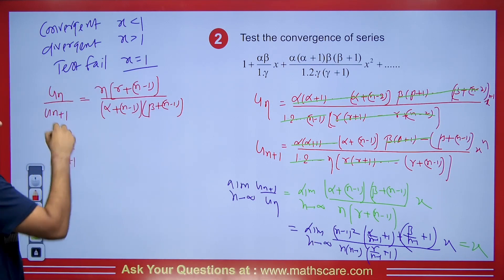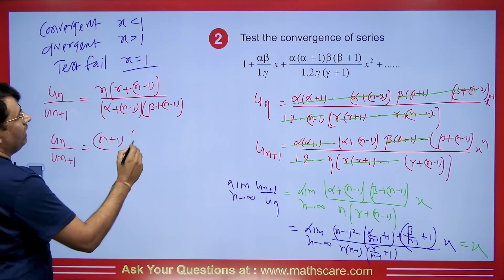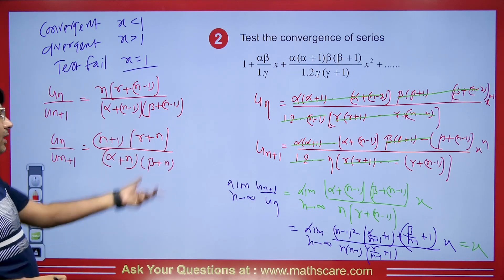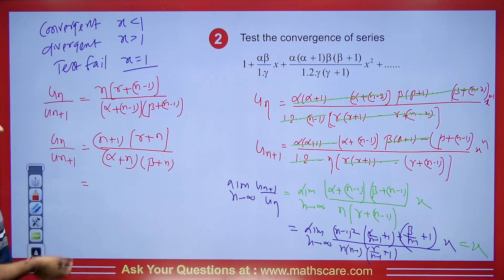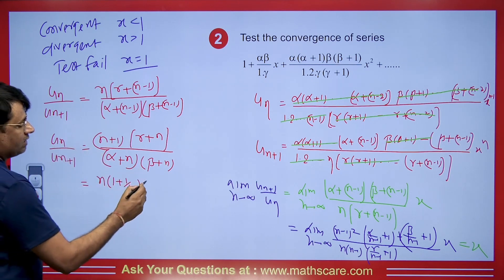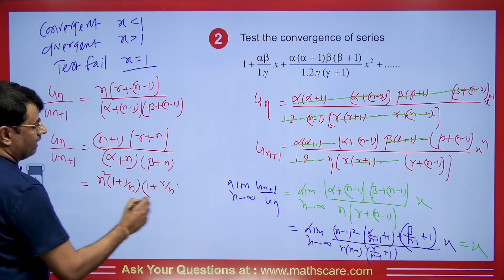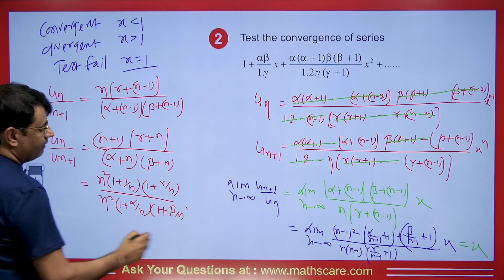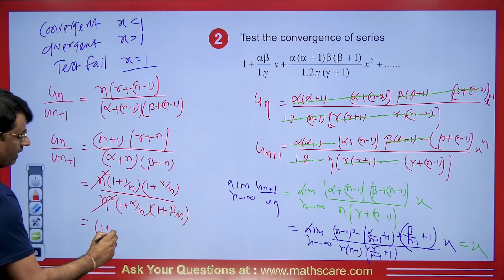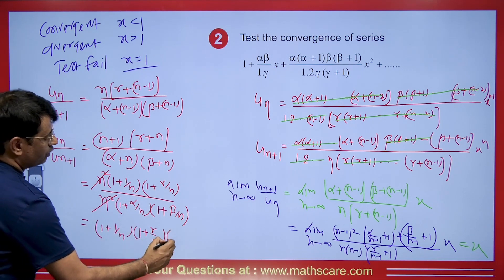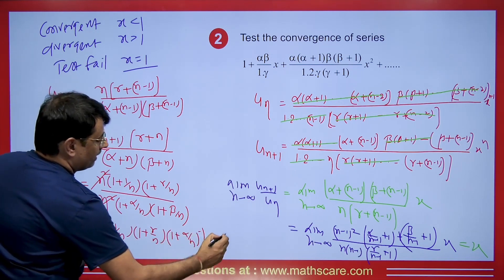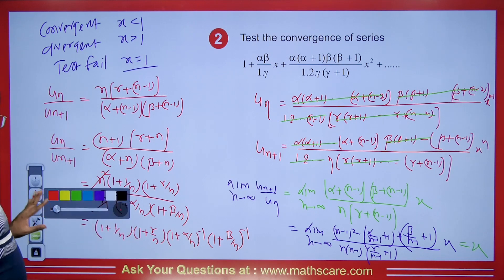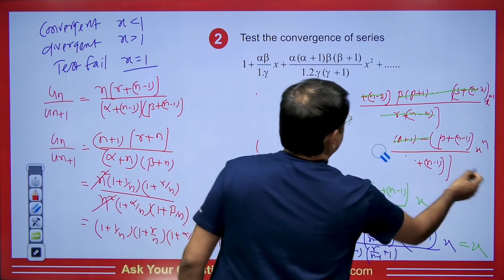After substituting n+1 for n, u_n/u_{n+1} becomes (n+1)(γ+n) / [(α+n)(β+n)]. Taking n as common from each factor: numerator gives n²(1+1/n)(1+γ/n) and denominator gives n²(1+α/n)(1+β/n). The n² terms cancel, leaving (1+1/n)(1+γ/n) / [(1+α/n)(1+β/n)].